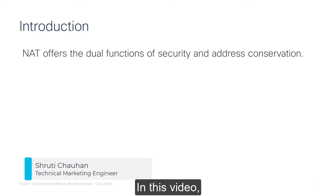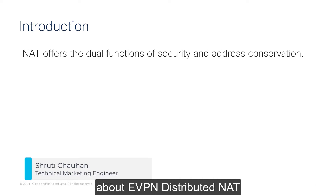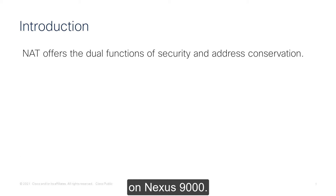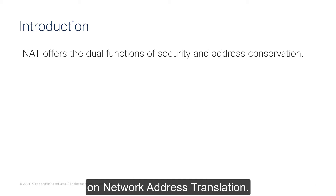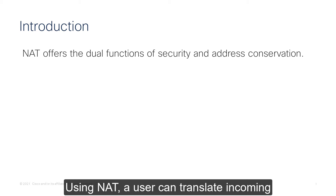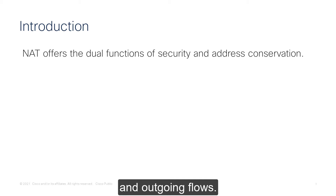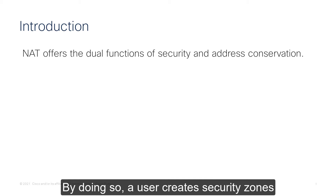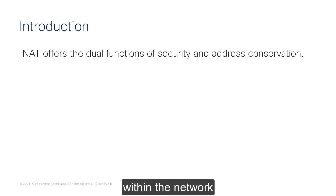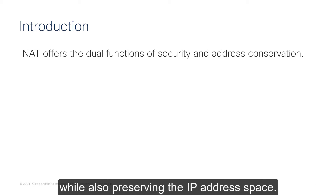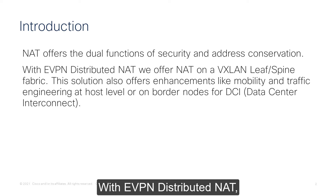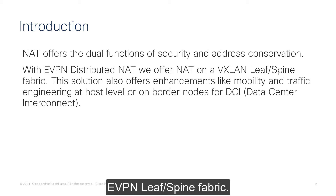In this video we are going to talk about eVPN distributed NAT on Nexus 9000. Let's do a quick recap on network address translation. Using NAT, a user can translate incoming and outgoing flows. By doing so, a user creates security zones within the network while also preserving the IP address space. With eVPN distributed NAT, we offer NAT on a VXLAN eVPN leaf-spine fabric.